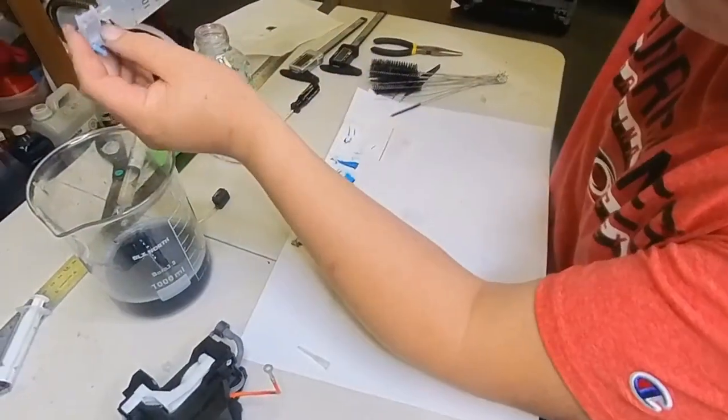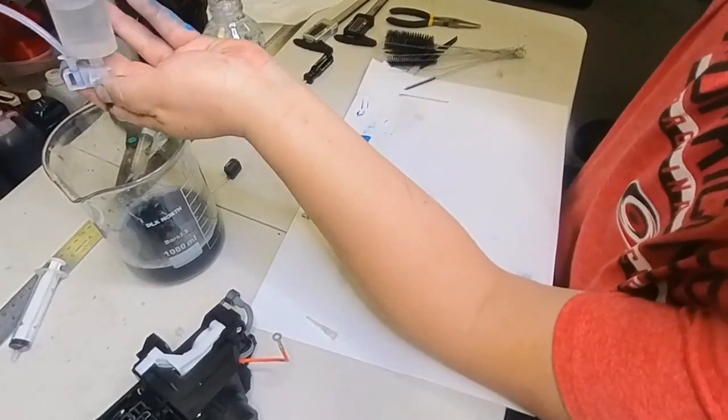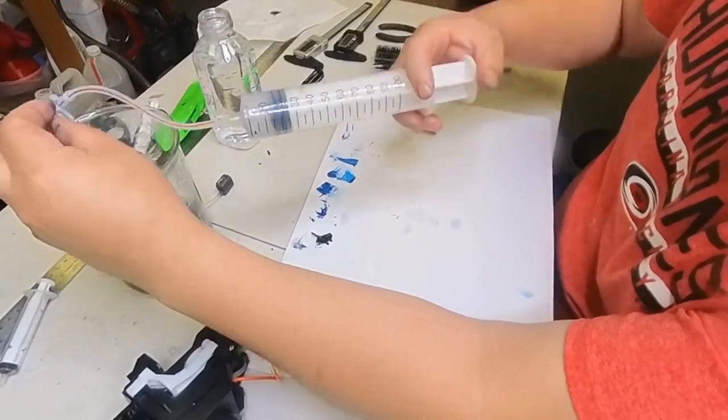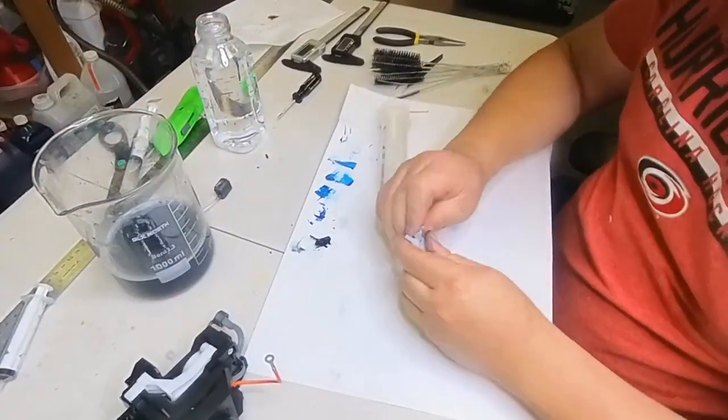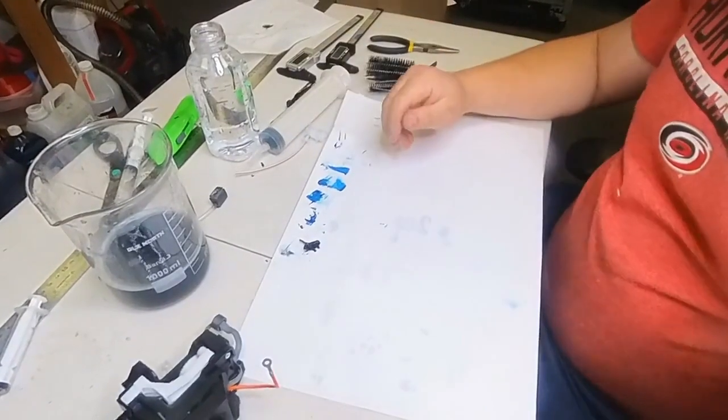Now we do the same thing for the ink intake. We already unclogged from the platform all the way to the ink intake. Now we clean the ink intake and outtake. Now the only thing left is the tube that's going inside the peristaltic pump.